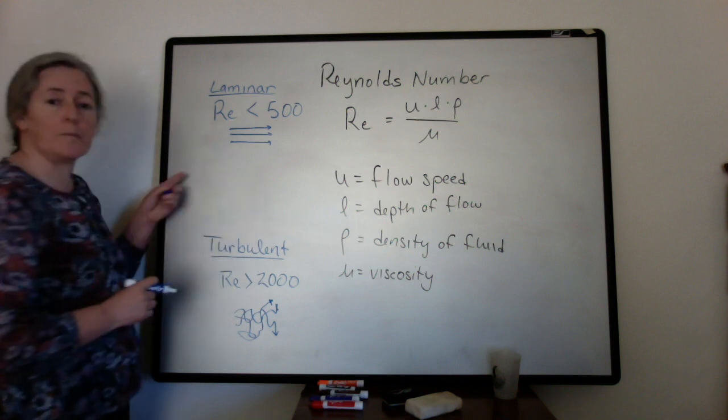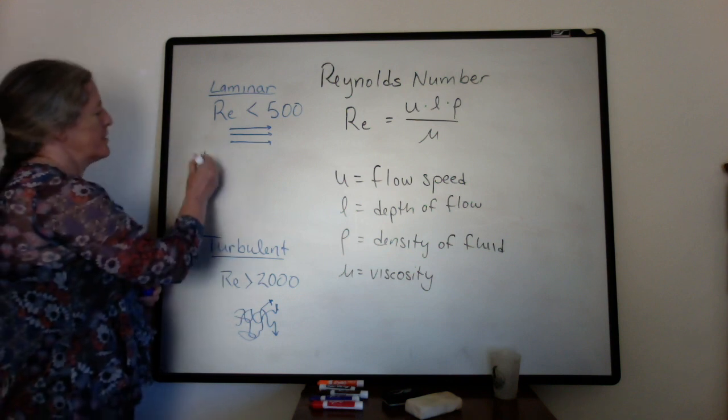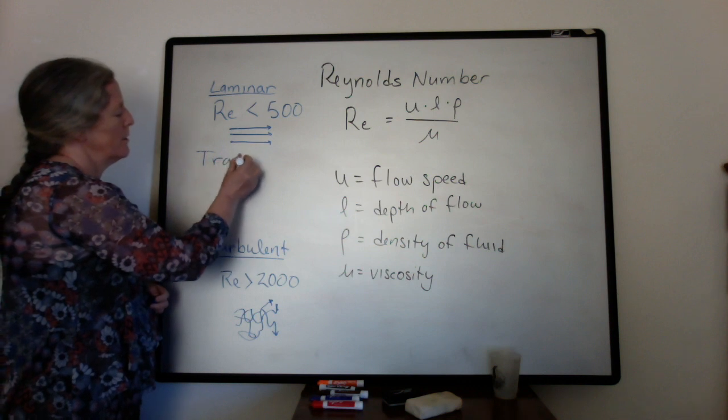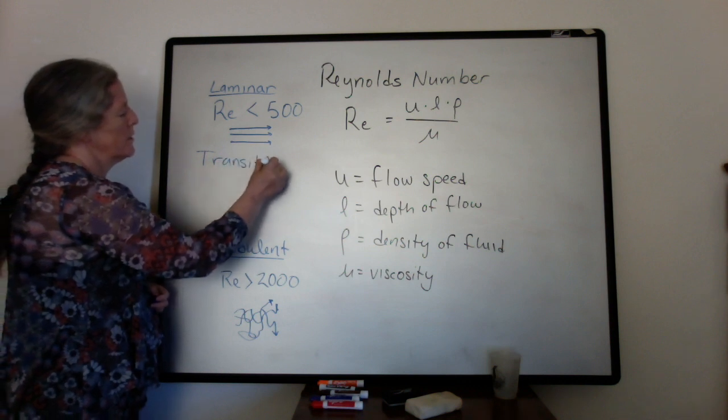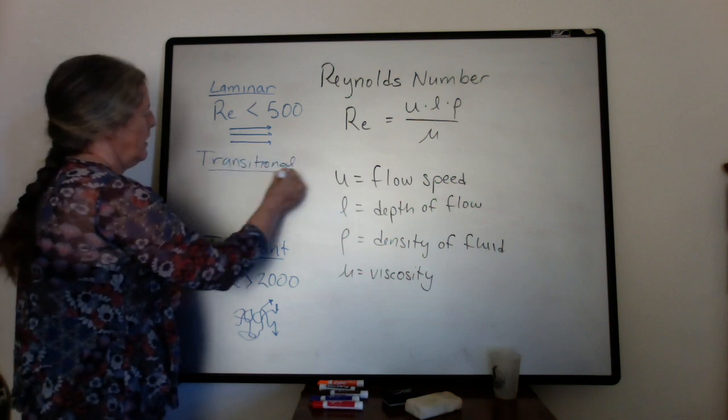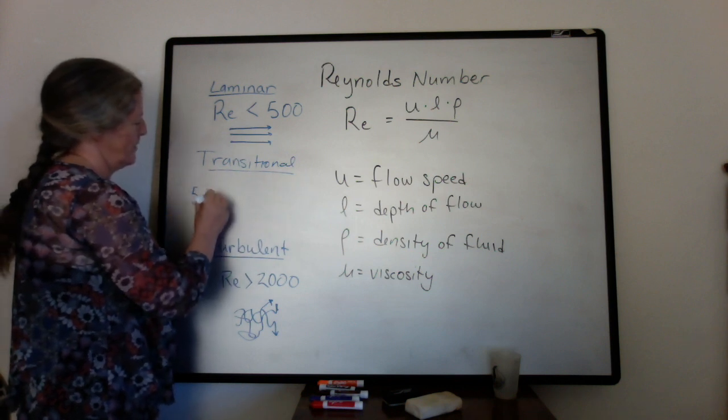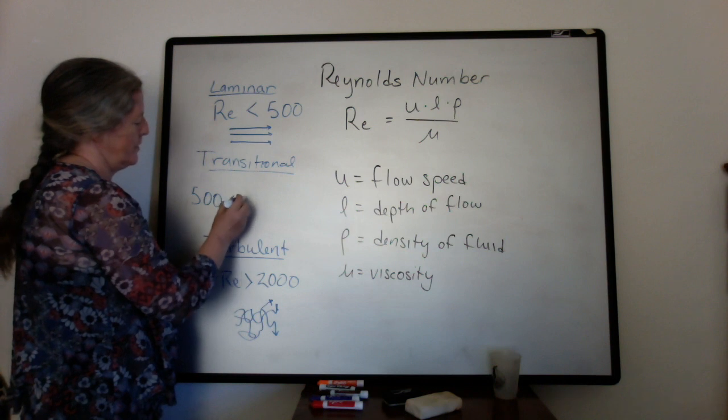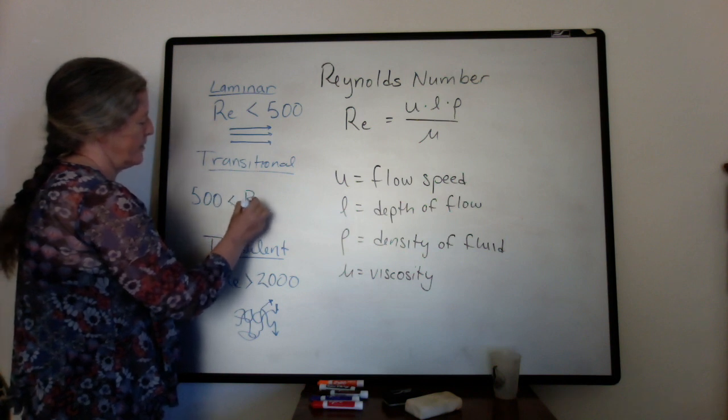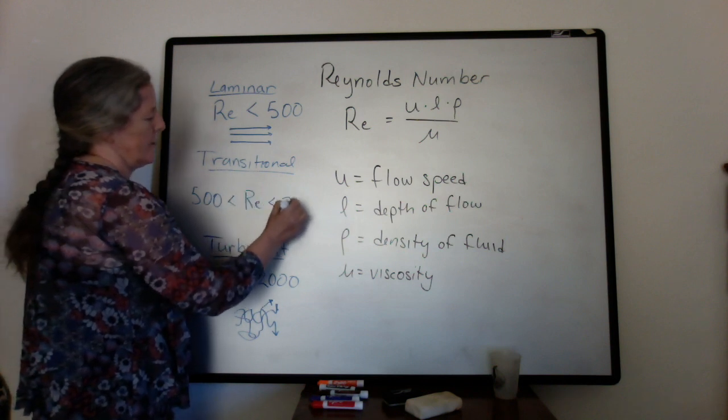And then, of course, in between, we have our transitional flows. And not surprisingly, transitional flows are ones when the Reynolds number is between 500 and 2,000.